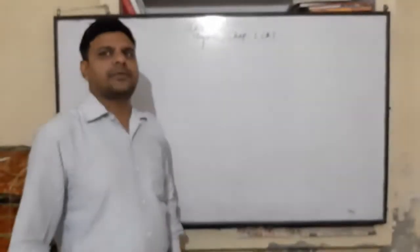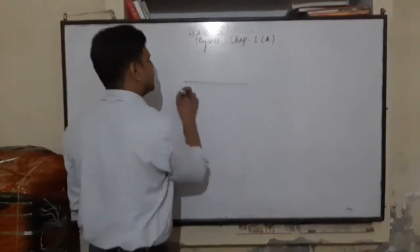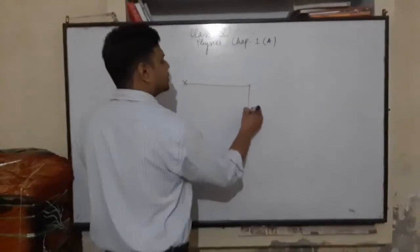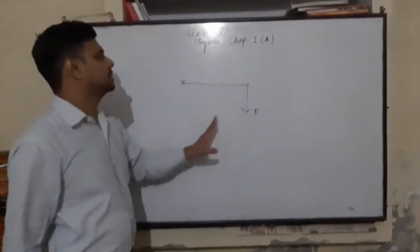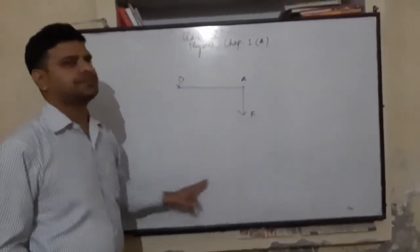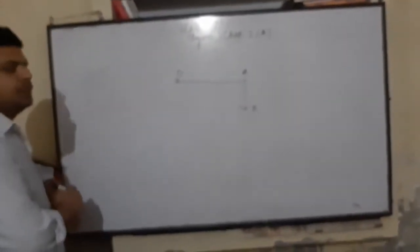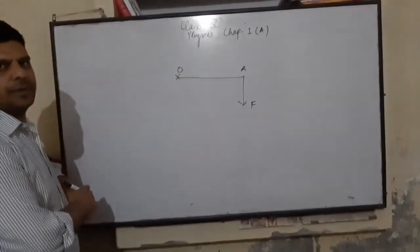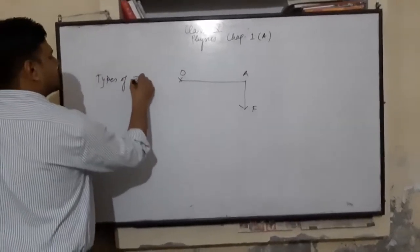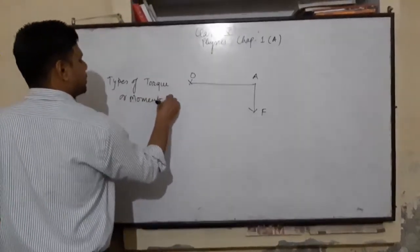Hello students, in the last lecture I explained rotation and torque - what is torque, consider this is a rod pivoted at a point, if we apply some force then this rod OA will rotate. Today I am going to explain the types of torque or moment of force.